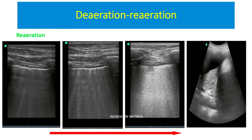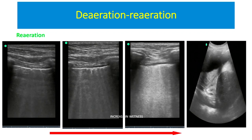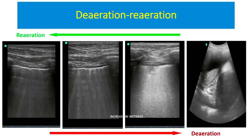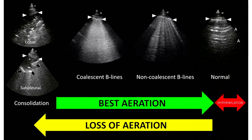Re-aeration is the opposite. This slide just tells you that if you have a normal pattern and it starts changing progressively, your aeration in the lung is getting affected by some means. It's also important to note that anything beyond the normal pattern could mean hyperinflation as well. Hyperinflation is something to be aware of, because most of our diseases like ARDS are non-homogeneous.